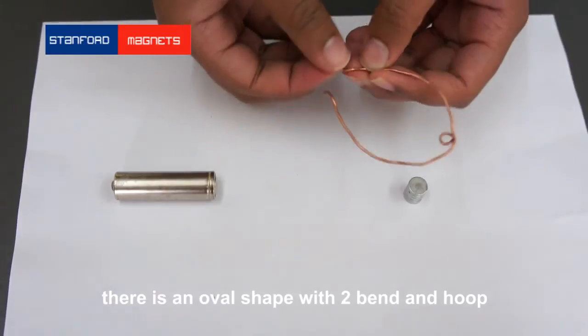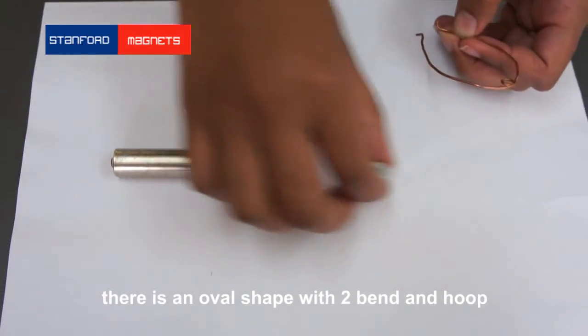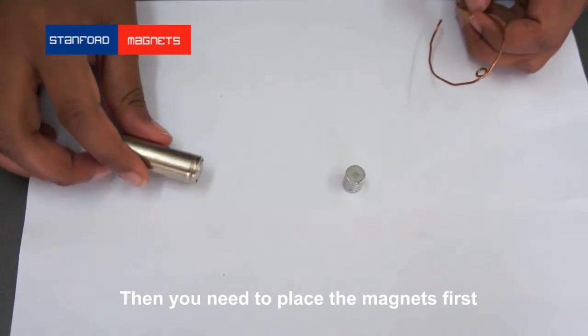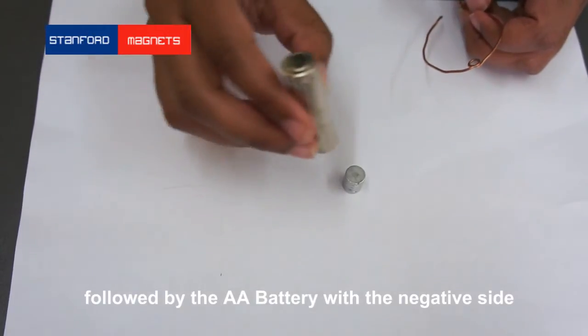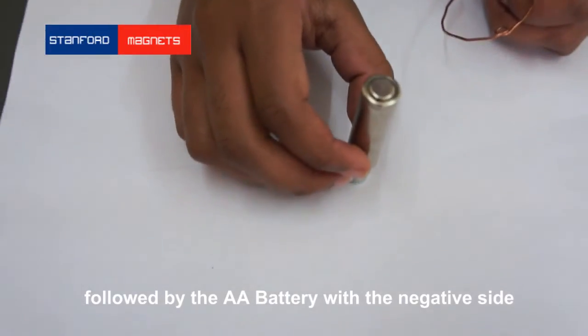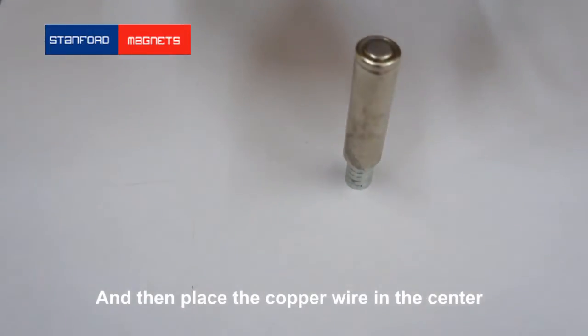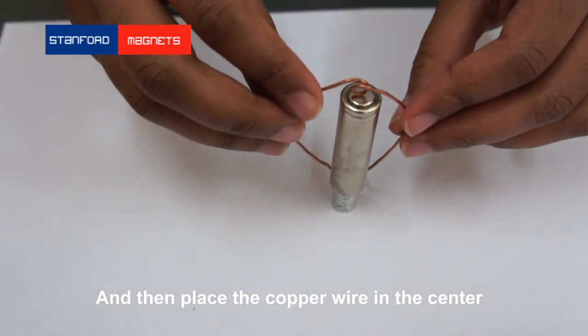there is an oval shape with two bends and a hoop. Then you need to place the magnets first, followed by the AA battery with the negative side. And then you place the copper wire in the center.